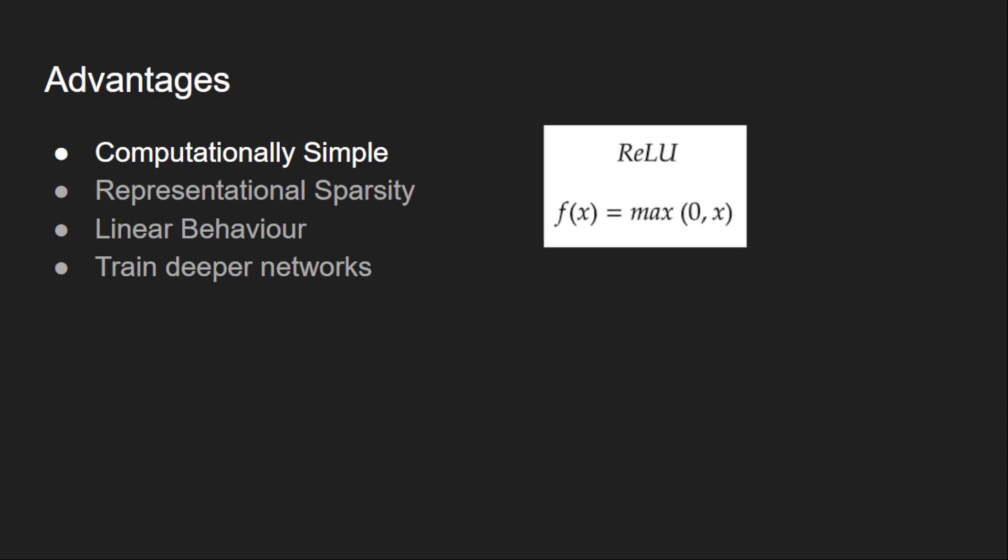And the second reason is its representational sparsity. We have seen that ReLU gives zero for the negative inputs. That indicates the sparsity in the inputs for the next layers. This is called sparse representation, and it is desired in accelerating the learning of model.